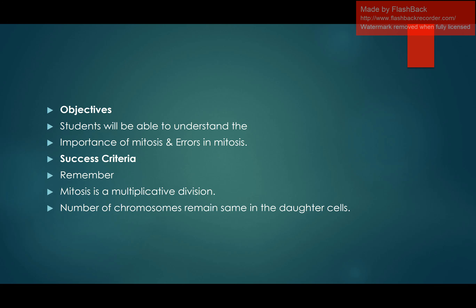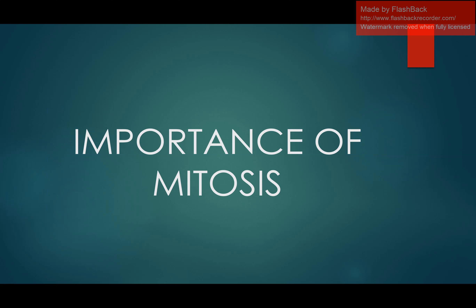The objectives for today's lecture are that you will be able to understand the importance of Mitosis, what errors can exist in Mitosis, and what their consequences are. To achieve these objectives, remember that Mitosis is a multiplicative division in which the number of chromosomes remains the same in the daughter cell as in the parent cell. We will discuss both the importance and the drawbacks or harmful aspects.